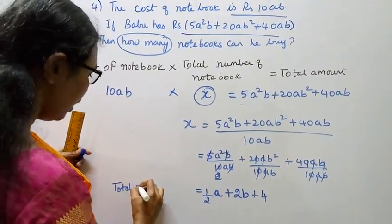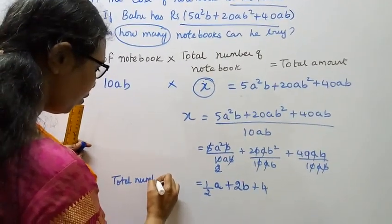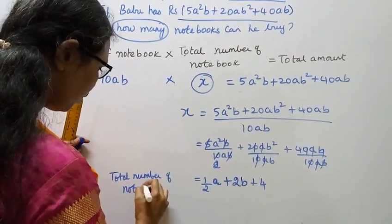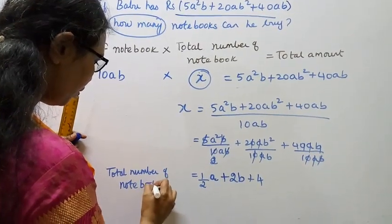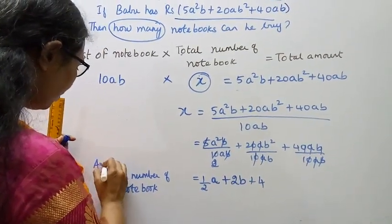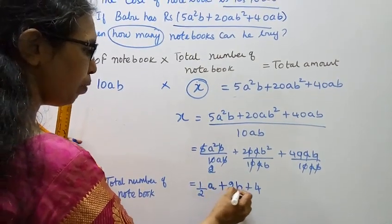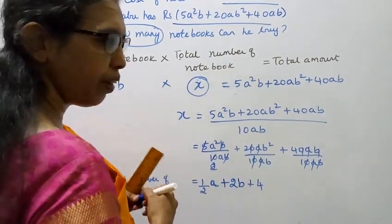Total number of notebooks equals one-half times a plus 2b plus 4. That is the answer.